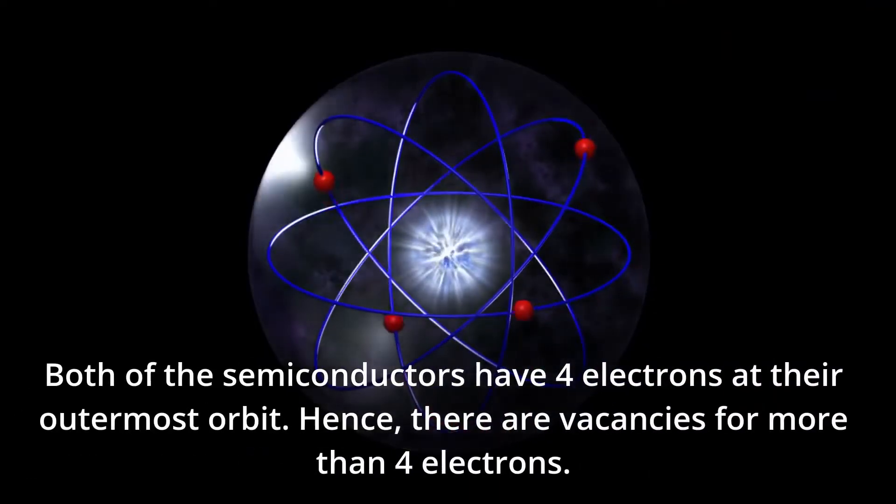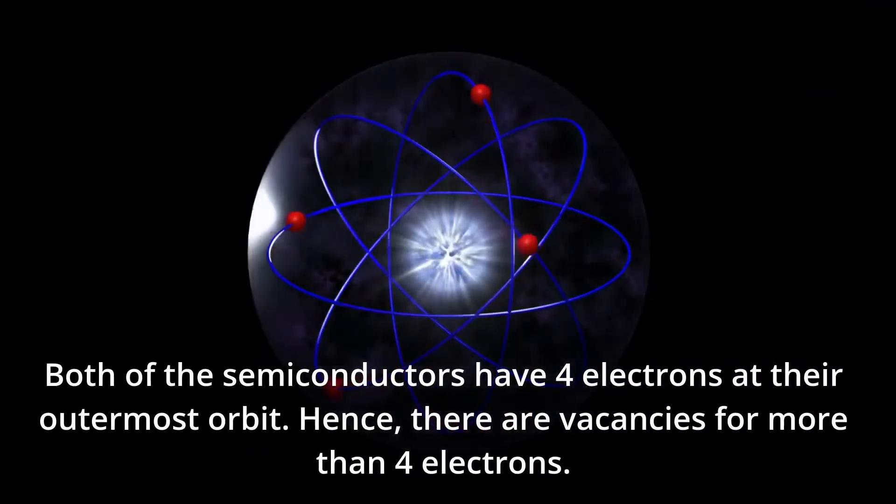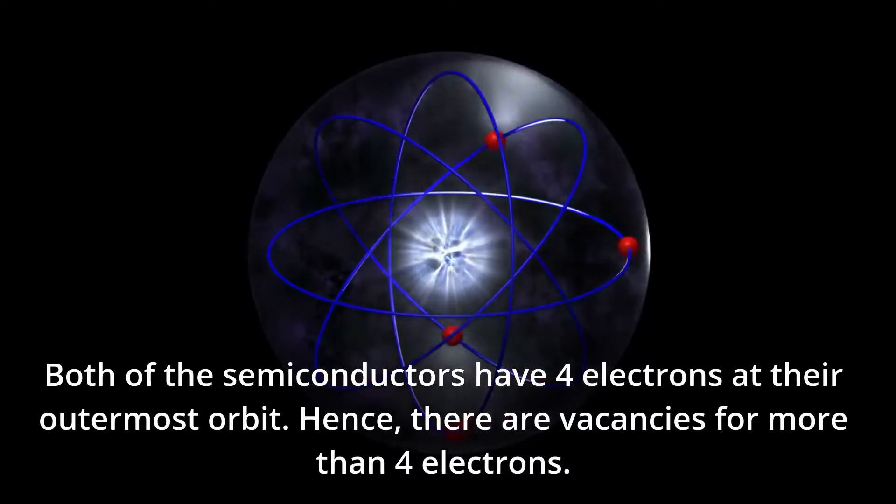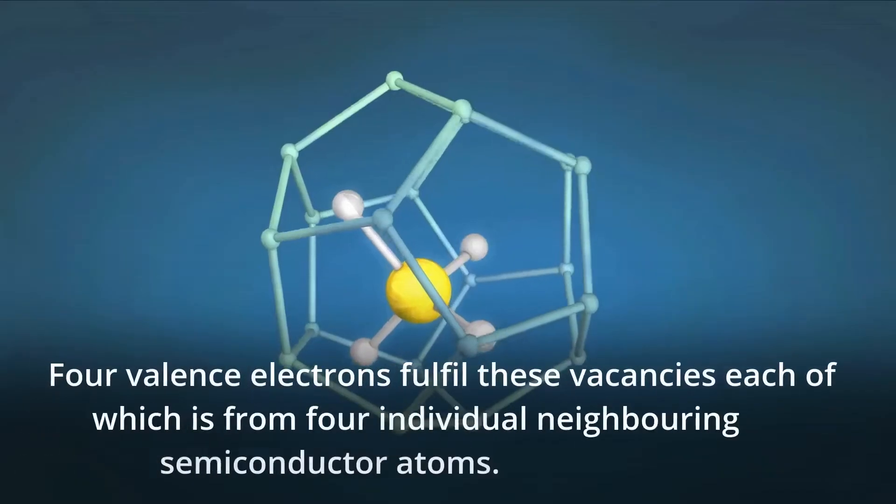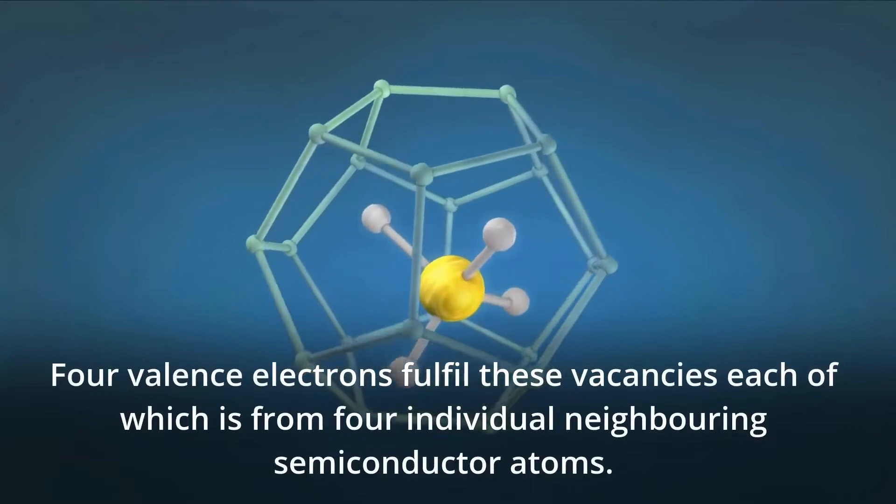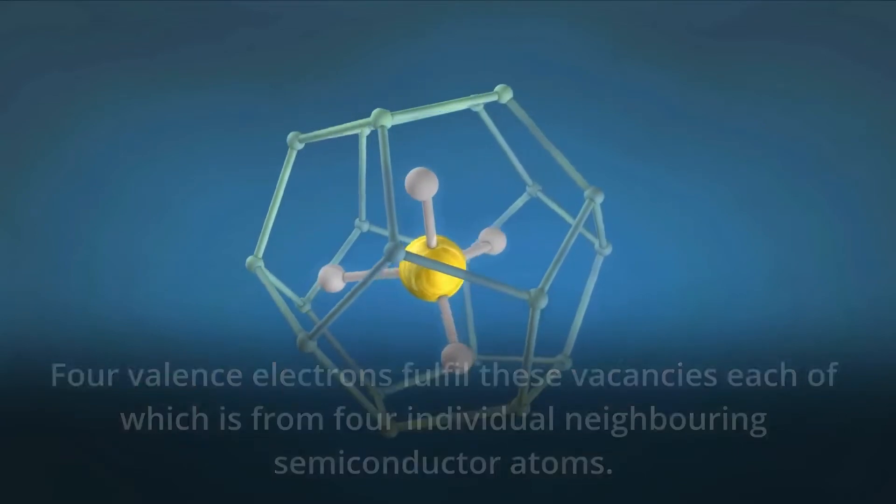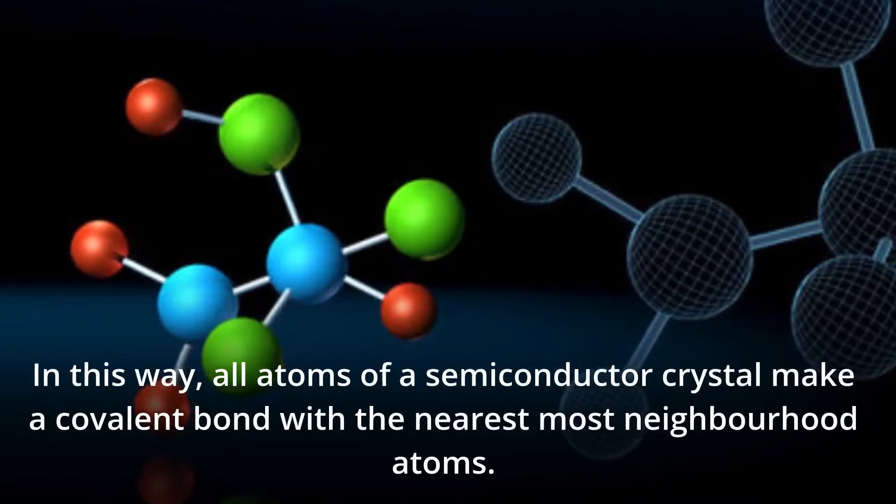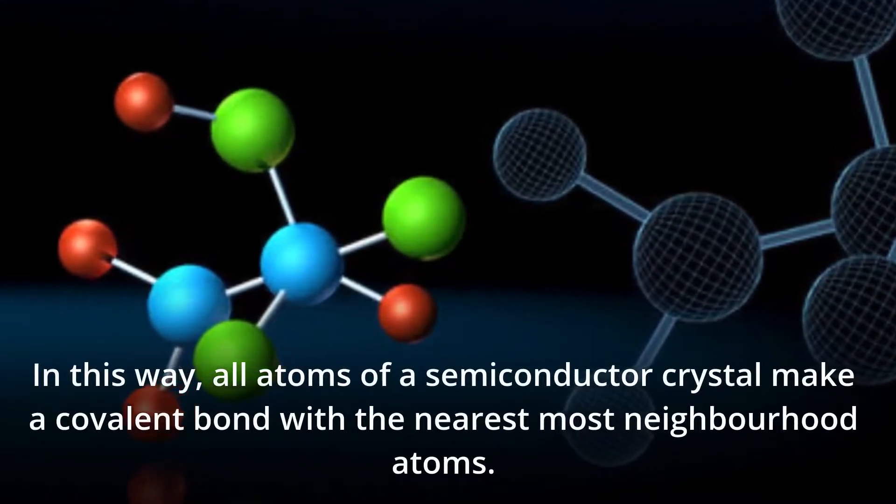Both semiconductors have 4 electrons at their outermost orbit. Hence, there are vacancies for more than 4 electrons. Four valence electrons fulfill these vacancies, each from 4 individual neighboring semiconductor atoms. In this way, all atoms of a semiconductor crystal make a covalent bond with the nearest neighboring atoms.